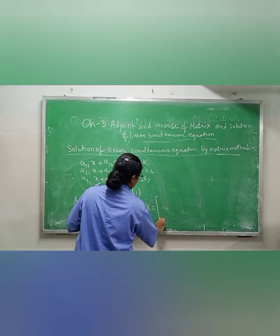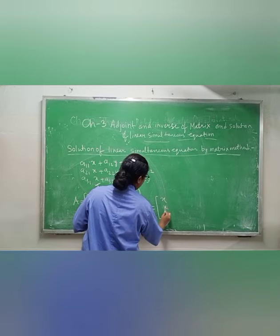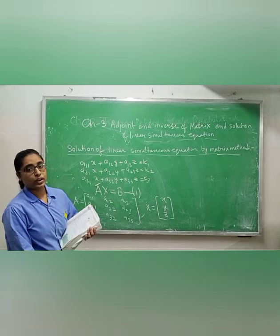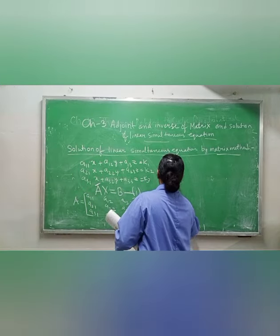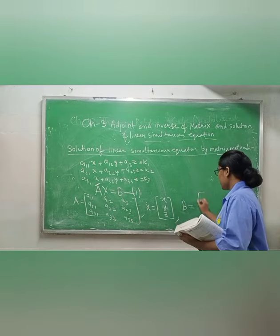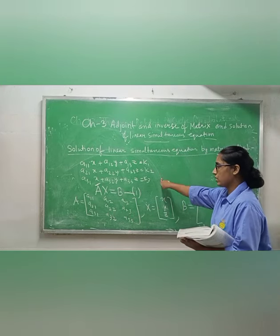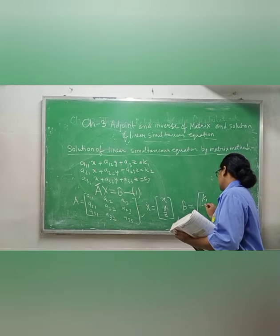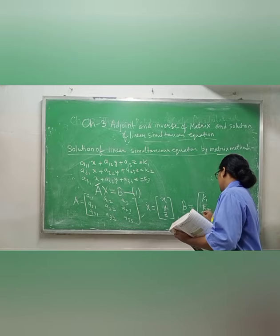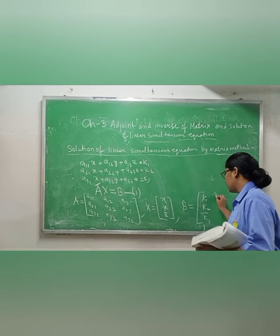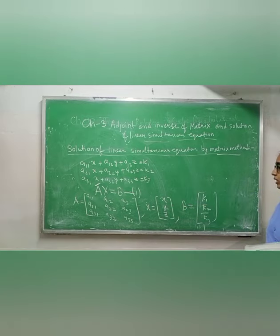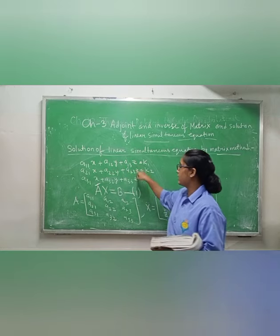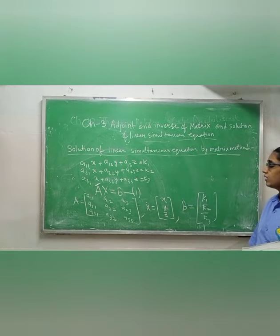Now X — we will take X as the column matrix [x, y, z]. And B will be the constants of the given equations. The constants are k1, k2, k3. So A is the coefficient matrix, X represents x, y, z, and B is the constant matrix.